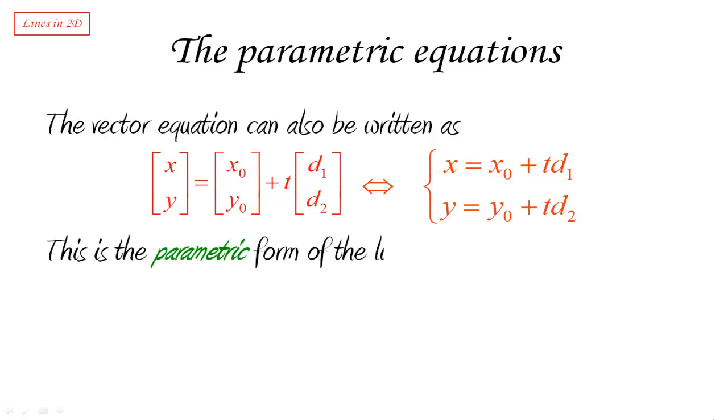And these are called the parametric equations of the line or the parametric form of the line. Again, this is very much connected to the vector equation, and d1, d2, being the direction vector, can be connected easily to the normal vector, and therefore the whole thing can be connected to the normal equation. So all of these forms are all related to each other, which is not surprising since we're talking about the same line here.